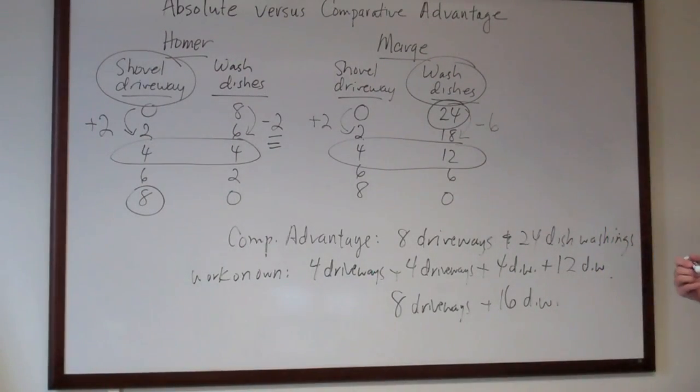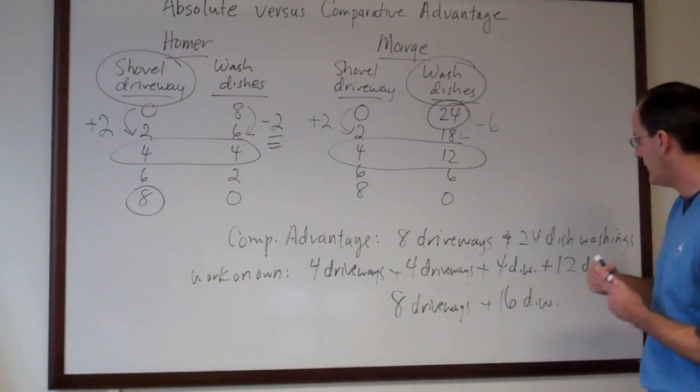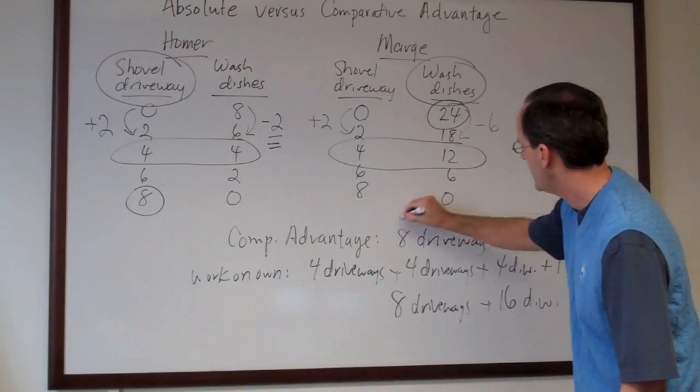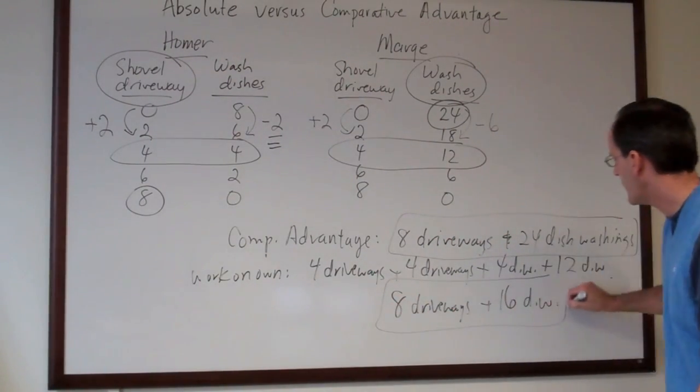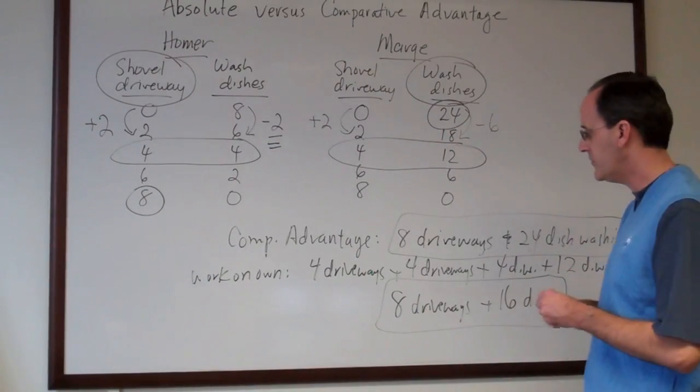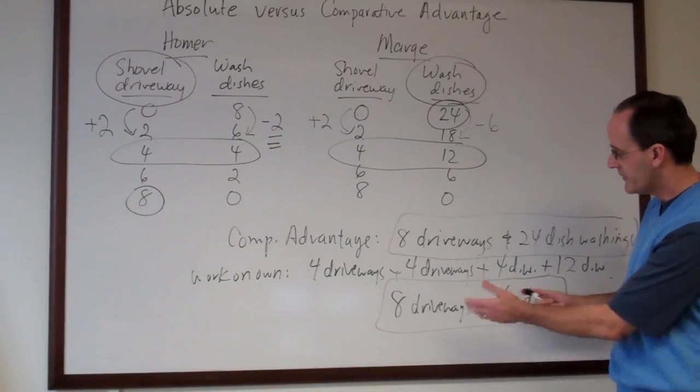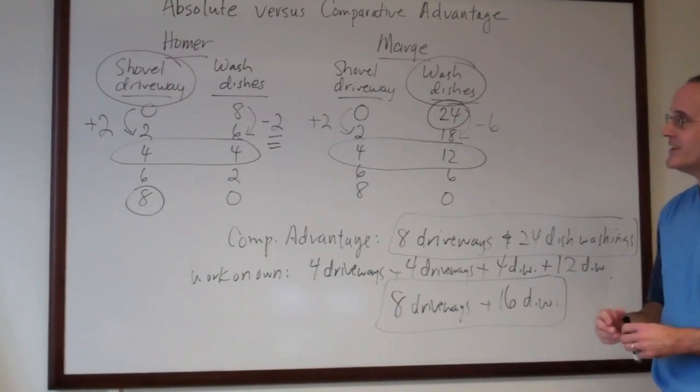And so this is the beauty of comparative advantage. Under comparative advantage, the combined output here is eight and 24. When they work on their own and do not attempt to benefit from the idea of comparative advantage, their joint production is less.